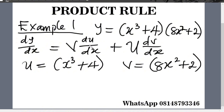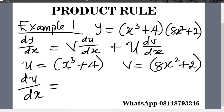Now let's find du over dx. du over dx equals: if you differentiate x raised to the power 3 with respect to x, it gives you 3x squared. Remember, you multiply x by the power and then subtract 1 from the power.